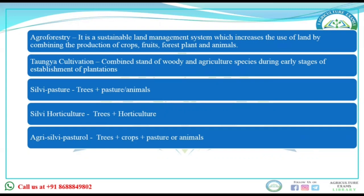Next is Taungya cultivation. In Taungya cultivation, in the initial days of establishment of the plantation, a combined stand of woody and agricultural species is grown — woody plants as well as agricultural species. Next is Silvi-pasture: cultivation of trees plus pasture for animals. Silvi-horticulture means trees plus horticulture crops. And Agri-Silvi-pasture means trees plus grass plus pasture.